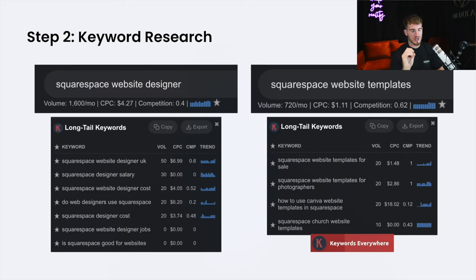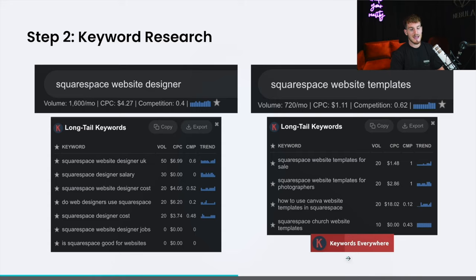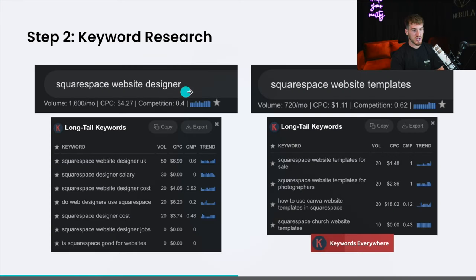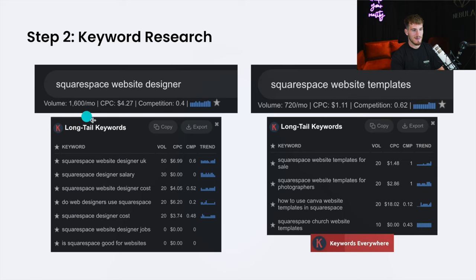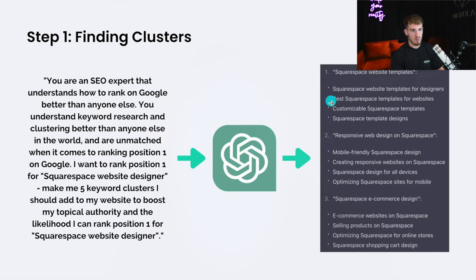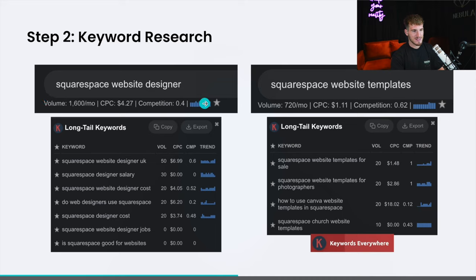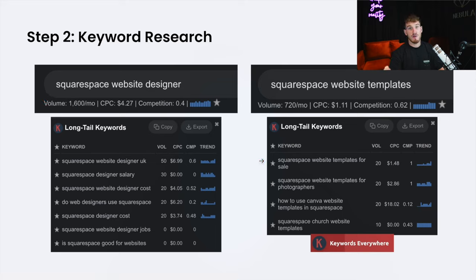After that, you're going to do keyword research using a tool called Keywords Everywhere. If I had to pick two tools to use for eternity in my SEO career, I would choose Keywords Everywhere and SEO Space. Keywords Everywhere is a super cost-effective keyword research tool that, for any keyword you search into Google, tells you how many people search for it per month and gives you related keywords. This lets you verify that the keywords ChatGPT gives you are actually being searched for — because we don't want to write blogs for keywords nobody searches for.